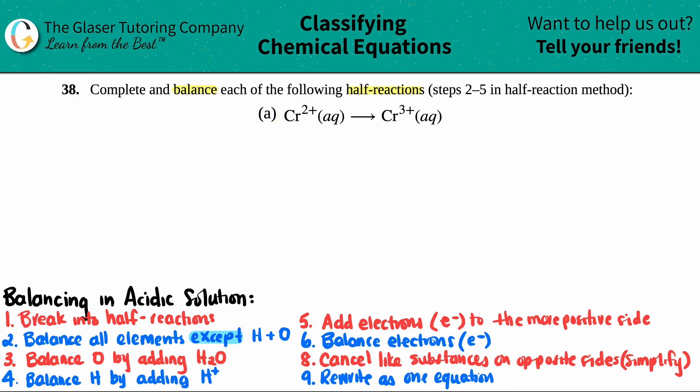So in this case, we need to balance chromium two plus, and that's aqueous, and that's going to yield Cr three plus, and that's aqueous.